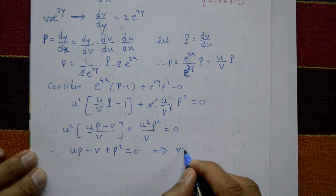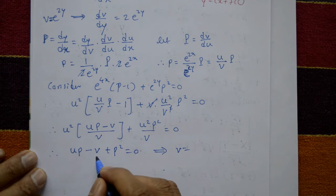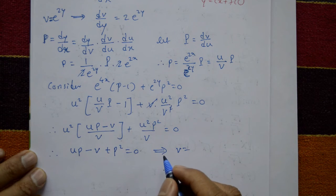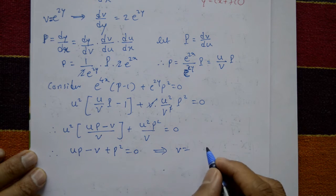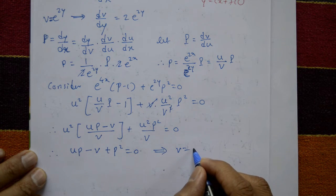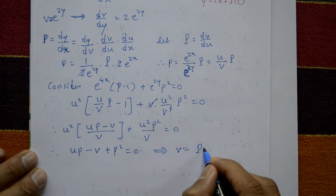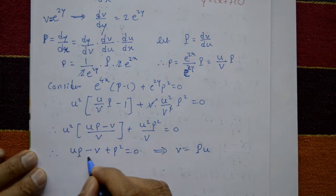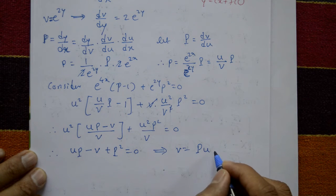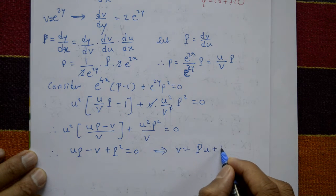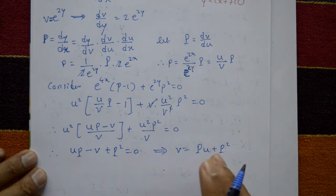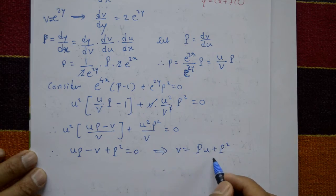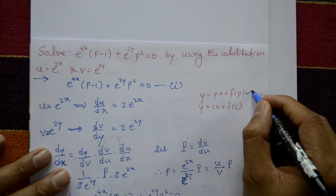Rearranging, v equals P times u plus P square. This is the general form of the Clairaut equation, matching the standard form y equals px plus f of p, where u plays the role of x and v plays the role of y.